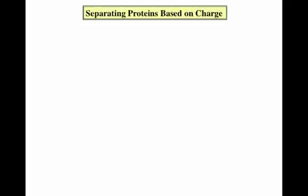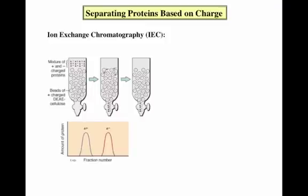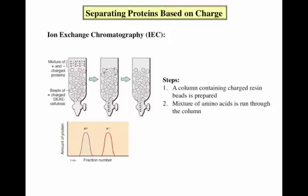In addition to separating proteins based on solubility, they can also be separated based on charge, in a very similar way as we saw with amino acids. Ion exchange chromatography can be performed with the same principles we have already discussed. You select either a cation or anion exchange column. The example shown here is an anion exchange column, which we can tell because the positively charged beads will hold onto anions. A mixture of proteins is run through the column and fractions are collected; proteins with a more positive charge will elute first, and those with a more negative charge will elute last.